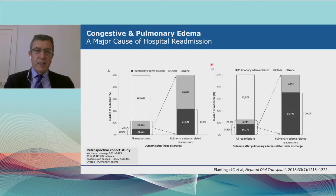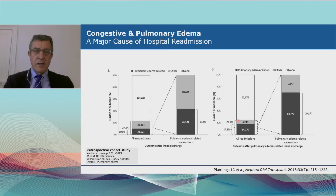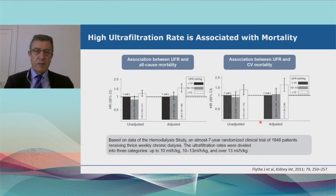Not only mortality, but fluid overload — from US data — is the first cause of hospitalization in the US. Almost 23–25% of hospitalizations are linked to pulmonary edema reflecting fluid overload. So it represents a major part of morbidity and has a tremendous impact on quality of life for patients.